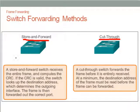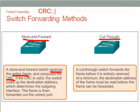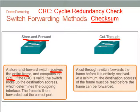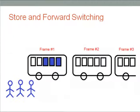Let's take a look at how store and forward switching works. For store and forward switching, it will receive the entire frame and compute the CRC. CRC stands for Cyclic Redundancy Check, also known as Checksum, and is used to check for the validity of the data sent. If the CRC is valid, the switch will refer to the destination address and try to forward the frame to the correct port.